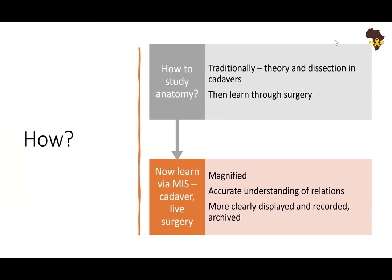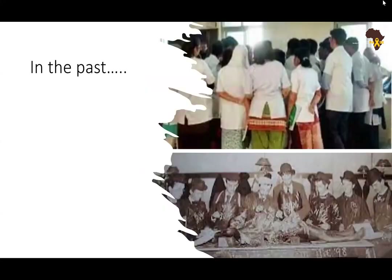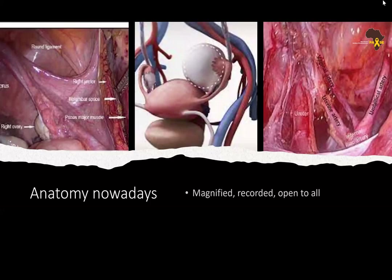How do we study anatomy? Traditionally, we studied anatomy by theory and dissecting cadavers. But over time we have learned through surgery. Nowadays we learn through minimally invasive surgery, either on a cadaver or on live surgery. The advantage is a magnified, accurate understanding of the relations — more clearly displayed and recorded for us to revisit. Nowadays we have magnified, recorded, and open-to-all anatomy.